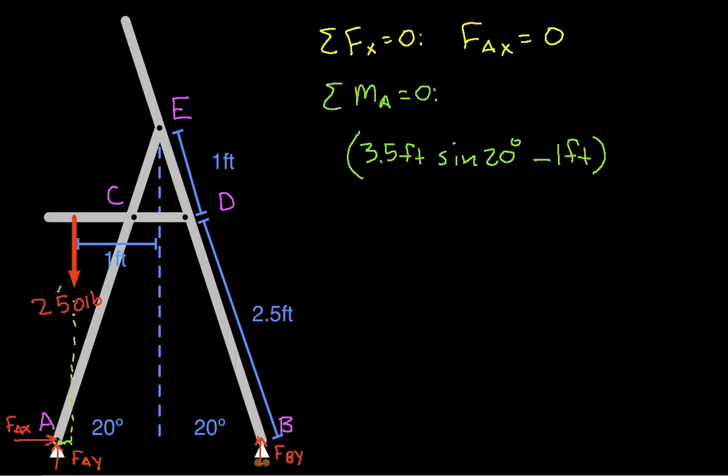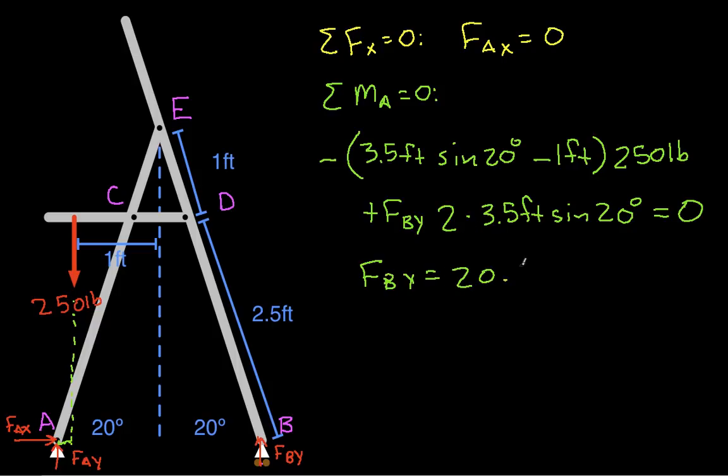It will be negative because this load will tend to cause a clockwise rotation around point A. So we add the 250 pounds. And then we have FBY going up. It's going to be positive because it's going to tend to induce a counterclockwise rotation. And it's operating on a moment arm that's 2 times 3.5 feet sine 20 degrees. And this equals zero. From this we can solve for FBY and we get that FBY is 20.58 pounds.